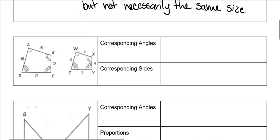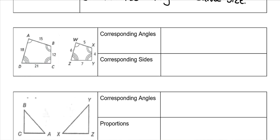We've got an example here, and these are similar polygons — specifically similar quadrilaterals — and they have corresponding angles and sides. The angles are the easiest ones to see, because one angle has one arc, and the corresponding one also has one arc; another has two arcs, and its corresponding angle has two arcs; then three arcs and three arcs, and four arcs and four arcs.